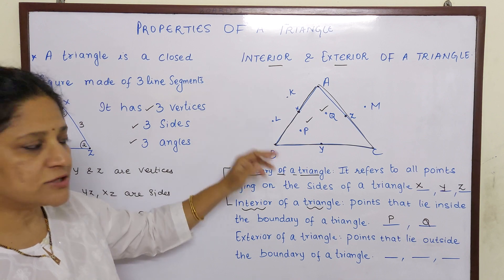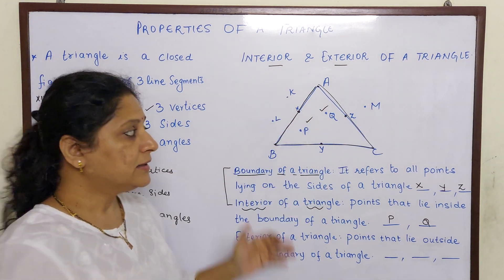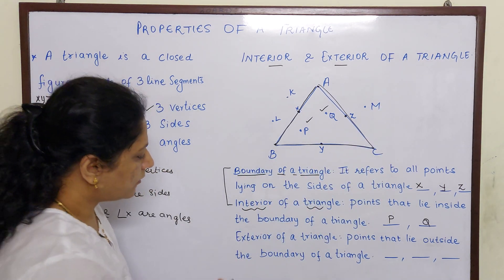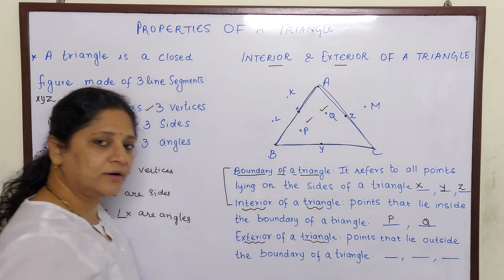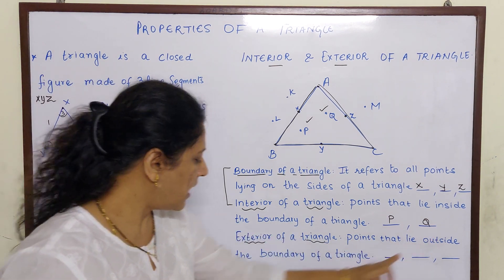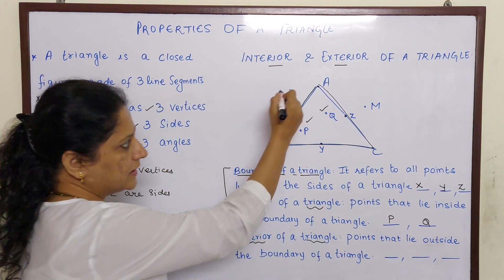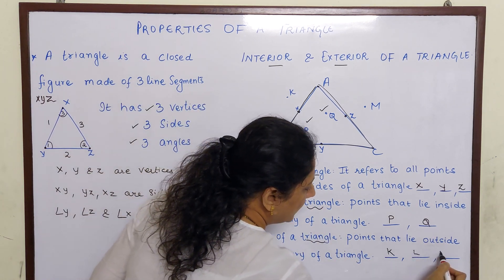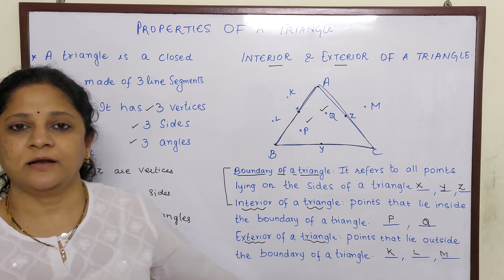Now what is left, children? K, L and M. They are outside the triangle. So they are called the exterior of a triangle — points that lie outside the boundary of a triangle. Point K, point L and point M. I hope you understood clearly.